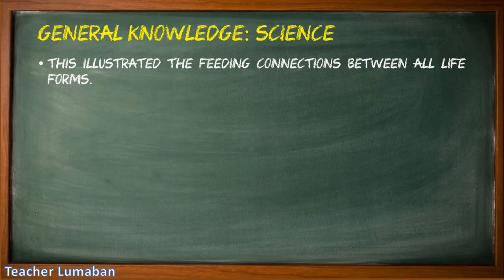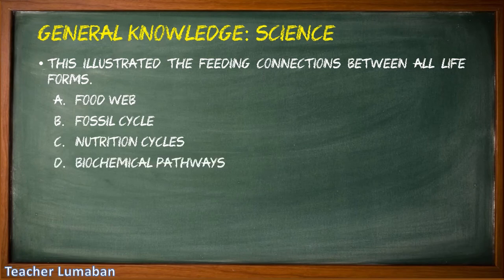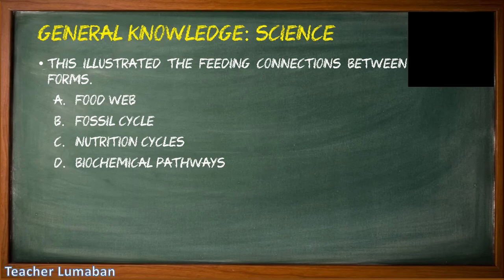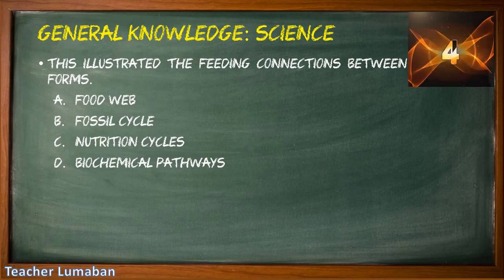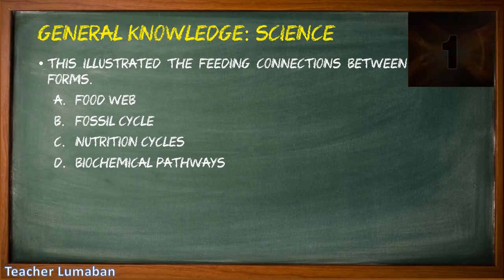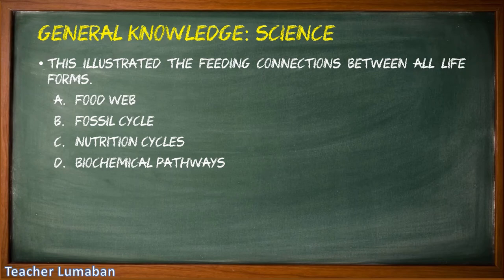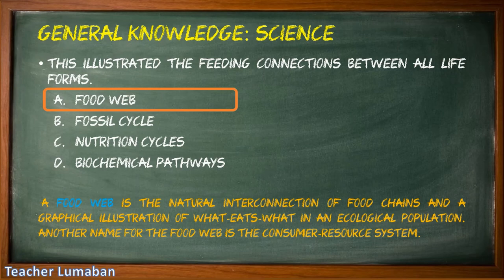This illustrates the feeding connections between all life forms. Letter A: food web, Letter B: fossil cycle, Letter C: nutrition cycles, Letter D: biochemical pathways. The correct answer is Letter A: food web. A food web illustrates the feeding connections between all life forms. It is the natural interconnection of food chains and a graphical illustration of what eats what in an ecological population. Another name for the food web is the consumer-resource system.